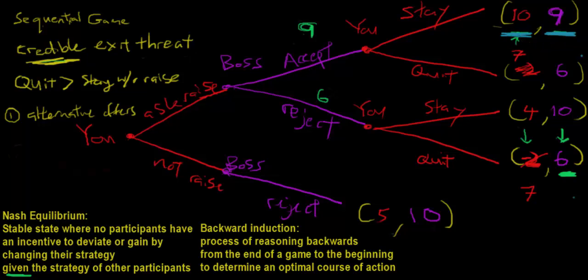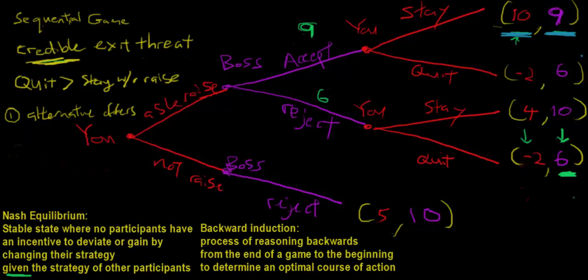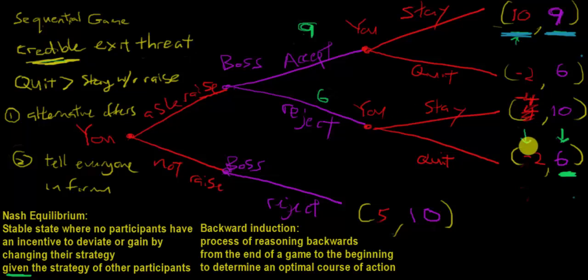Another way to get a raise — even without other offers, even if quitting is still painful (negative 2) — is to tell everybody in the firm that you will definitely quit if you don't get the raise. We're attacking the payoffs of staying: because you've told everyone, it becomes impossible to stay when rejected — it's utterly humiliating. This again achieves the favorable Nash equilibrium. The central idea is that a credible exit threat matters, and sometimes committing to a choice — even eliminating options — increases your bargaining power.